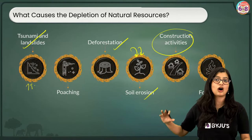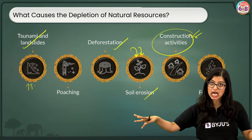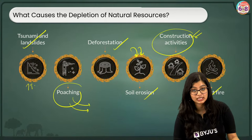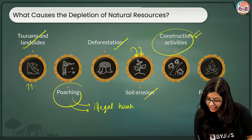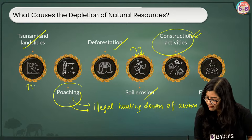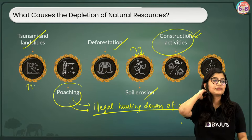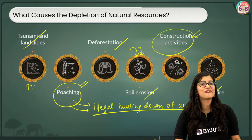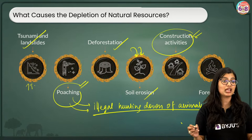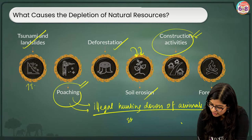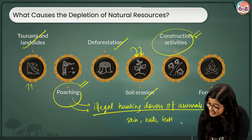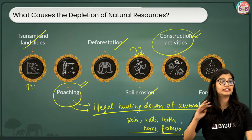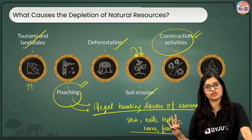If deforestation happens, the soil is exposed and soil erosion occurs. Tsunamis and landslides can also affect natural vegetation as natural causes. Construction activities require clearing large areas of land. Then there is poaching — the illegal hunting down of animals — for their skin, nails, teeth, horns, and even feathers. Over a period of time our natural vegetation and wildlife are getting depleted.